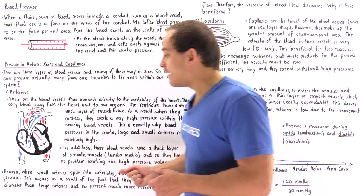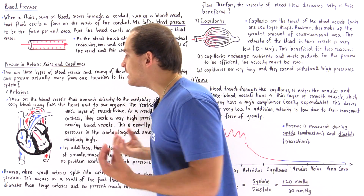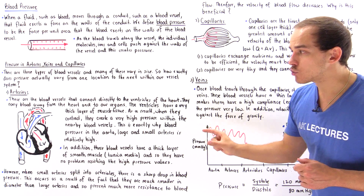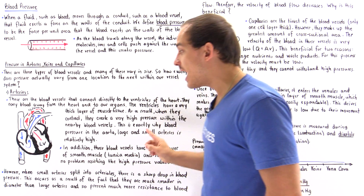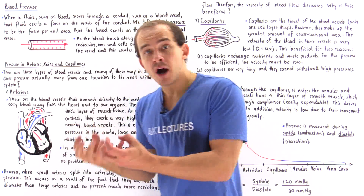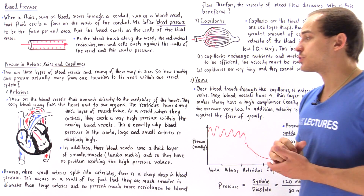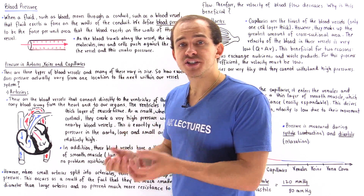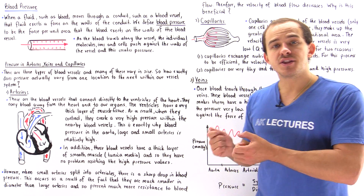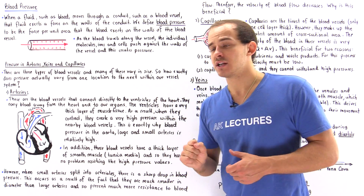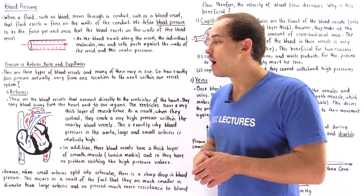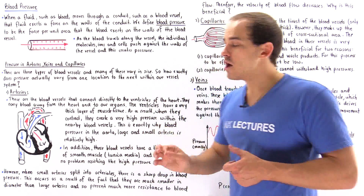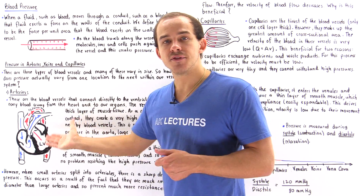The left ventricle forces blood to quickly fill the aorta, and that is exactly why this large artery contains very high pressure — because it's connected directly to the pump that establishes that high pressure in the first place. Arteries are made specifically to withstand these high pressures; they have a very thick layer of muscle within the tunica media layer. So large arteries and smaller arteries have a relatively high hydrostatic pressure for this reason.